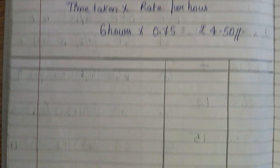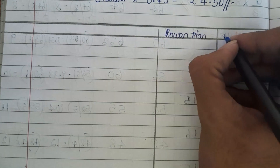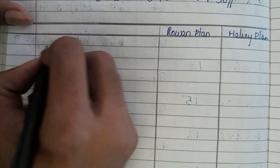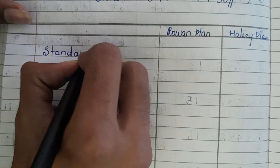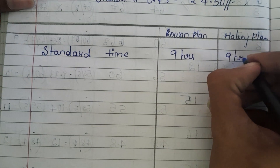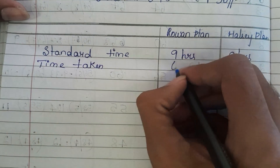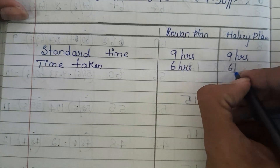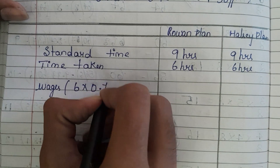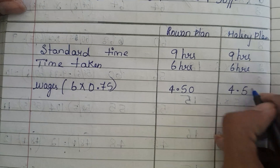Now let us calculate on the basis of Rowan plan as well as Halsey plan. For both, the standard time is 9 hours and 9 hours. The actual time taken is 6 hours. To calculate wages, it is 6 hours into 0.75, so both will get wages of 4.5 and 4.5.